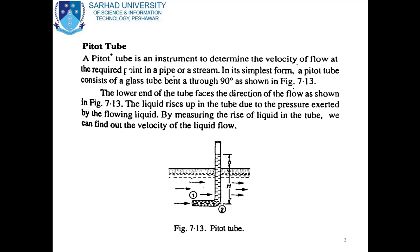a Pitot tube consists of a glass tube bent through 90 degrees, as shown in Figure 7.13. The tube is bent at an angle of 90 degrees, as you can see in the figure.